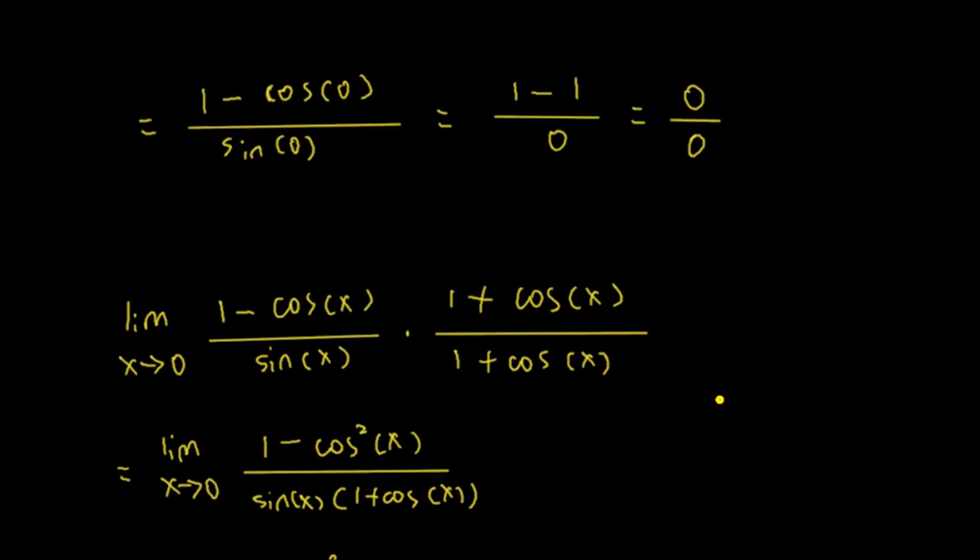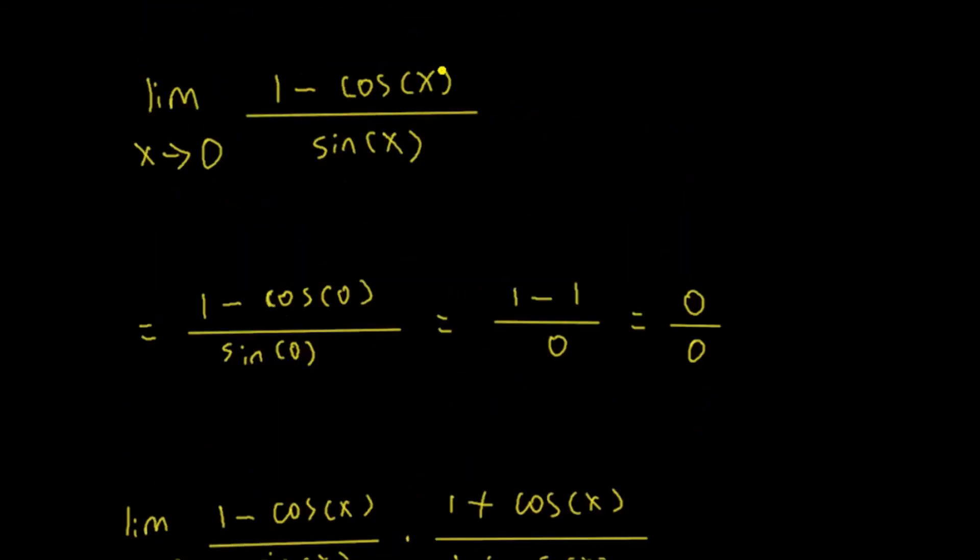We can say that limit as x approaches 0, 1 minus cosine of x, over sine x is equal to 0. Hope you enjoyed this video. Don't forget to subscribe to my channel. Thank you.